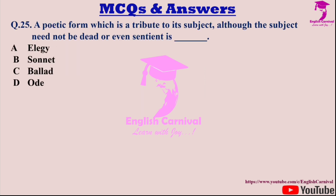Question twenty-five: A poetic form which is a tribute to its subject, although the subject need not be dead or even sentient, is — dash. Options are A: Elegy; B: Sonnet; C: Ballad; and D: Ode. Correct answer is D — the ode.